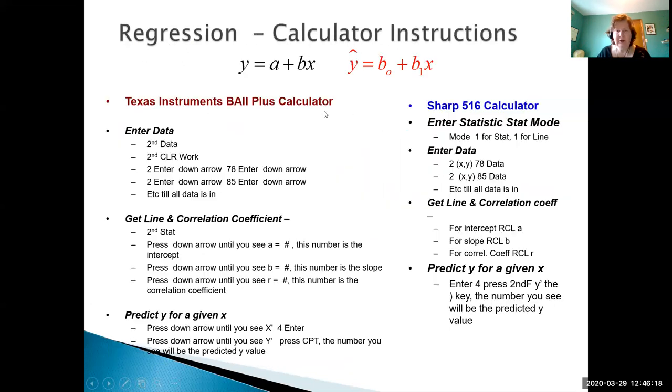If you want to try it on your calculator, here's our instructions for our Texas BA-II Plus calculator for entering data, getting the equation of the line and the correlation coefficient, and then doing a prediction for y given x. And if you happen to have a different calculator, the Sharp EL-516, there's the instructions for that one.